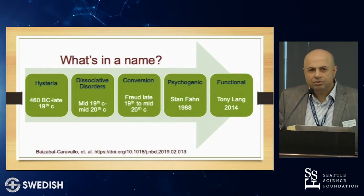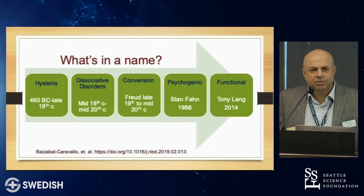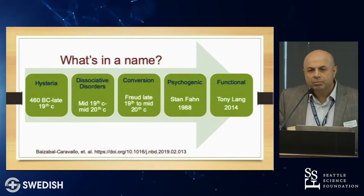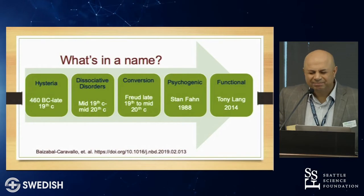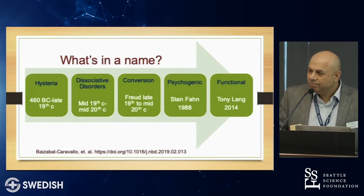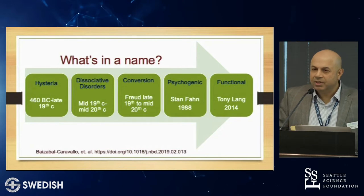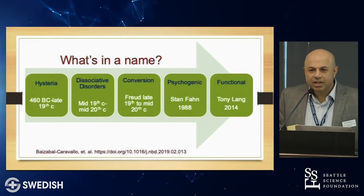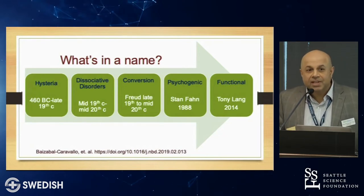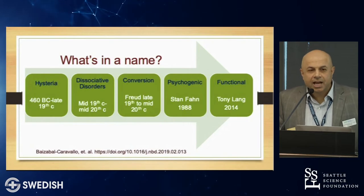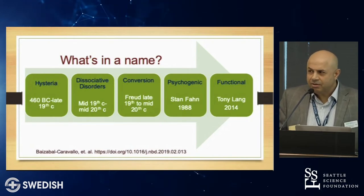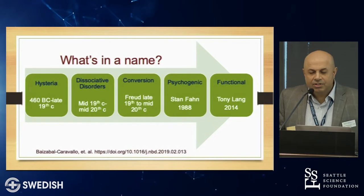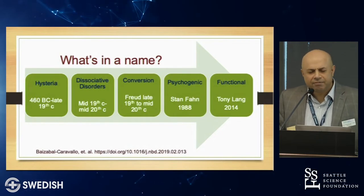Stan Fahn, one of the gurus of movement disorders from Columbia University, proposed calling this psychogenic movement disorder. Patients did not like the term — it had a stigma associated with it. You said psychogenic and people thought they were psycho. A lot of times patients would say, 'What are you trying to tell me? I'm psycho?' So this term sort of fell out of favor.